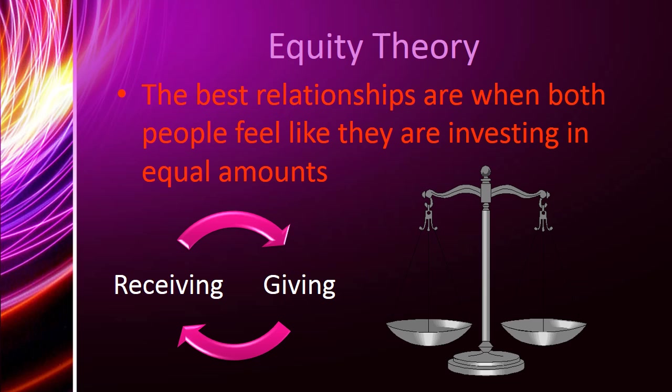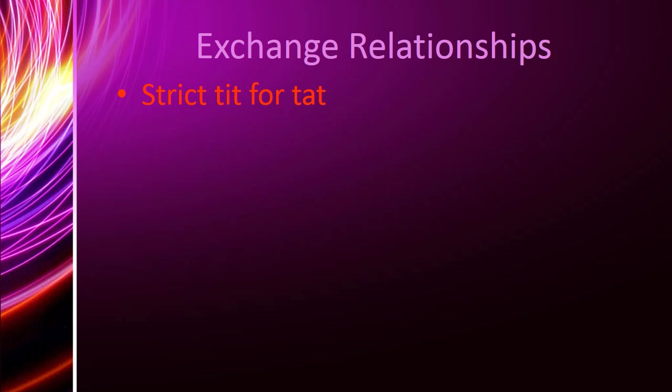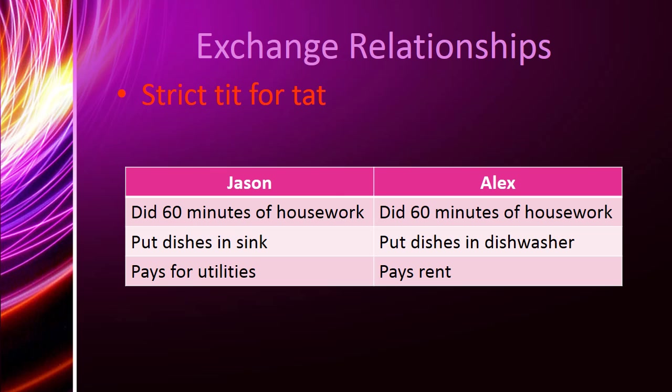There are two different ways to try and make things equitable. The first is an exchange relationship. In an exchange relationship, people are making sure that the other person is putting in exactly as much as they are.